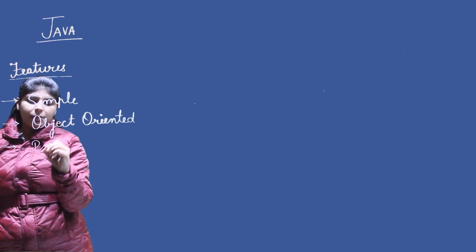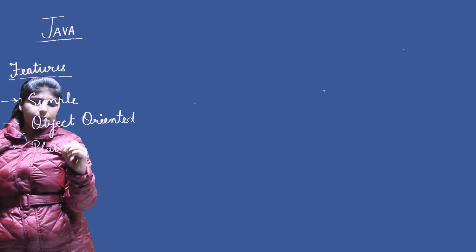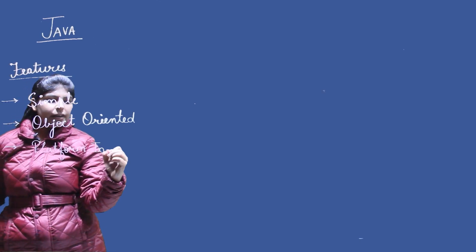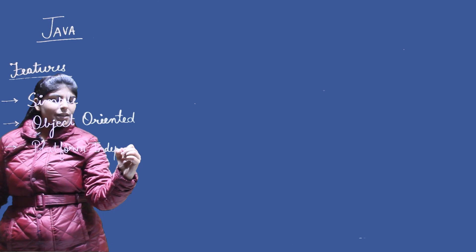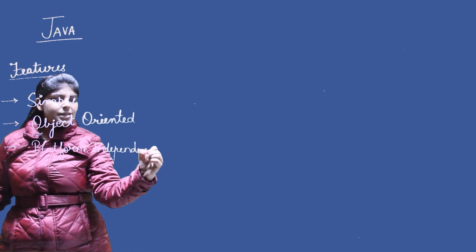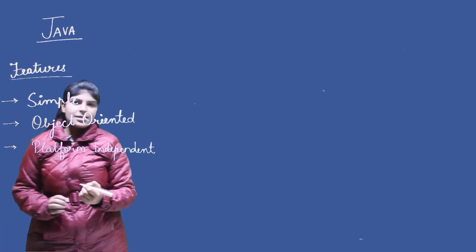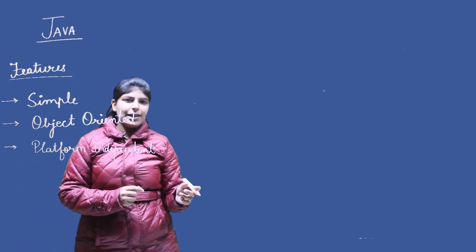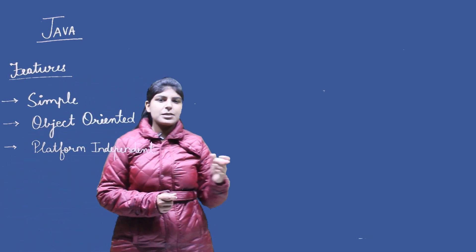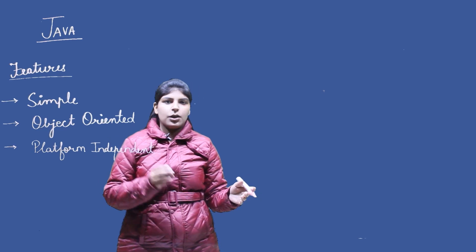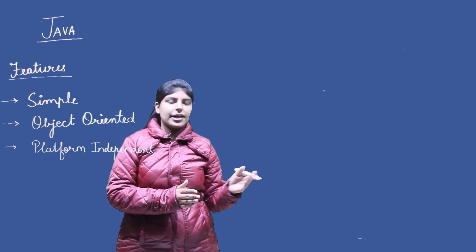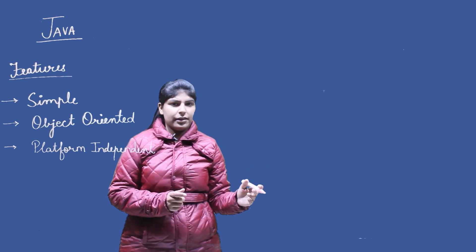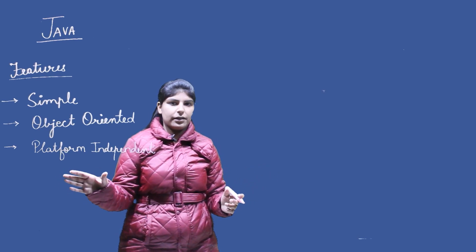Next is platform independent, which means that Java is not dependent on the platform. A platform is a combination of operating system and architecture. For example, Windows plus Intel is one platform, Linux plus Intel is another, and Windows plus AMD is yet another. On different platforms the same code can run, that's why Java is called platform independent.